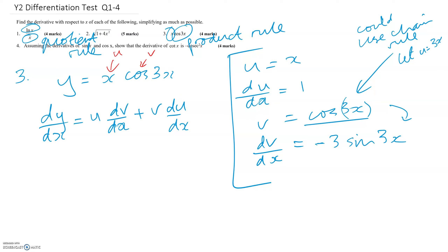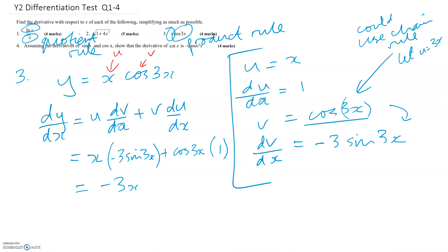Now substituting into the product rule formula: x times dv/dx is minus 3·sin(3x), plus v which is cos(3x), multiplied by du/dx which is 1. Tidying up, we get minus 3x·sin(3x) plus cos(3x), and that doesn't simplify further, so that's the final answer.